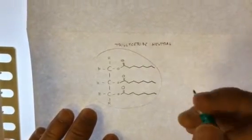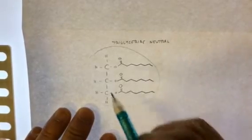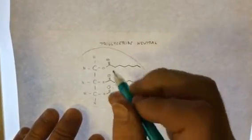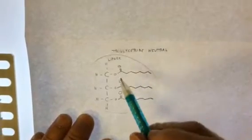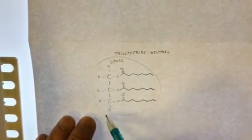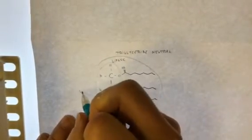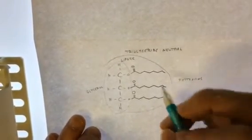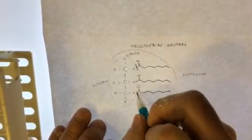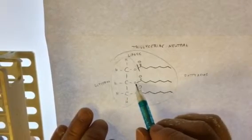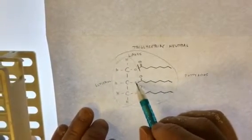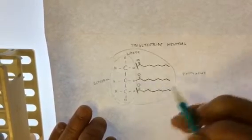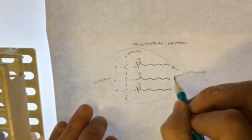So what lipases do is they break chemical bonds in these triglycerides. Specifically, between the glycerol molecule and the fatty acids. And all of these are fatty acids. So lipases are going to come along and break that bond and that bond. And they'll leave the middle bond intact, this bond that's joining this fatty acid to glycerol. So just to be clear, these are the fatty acids.